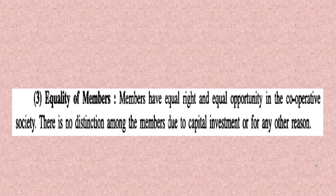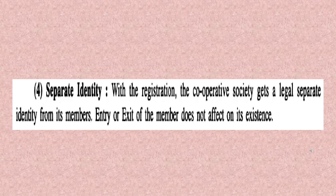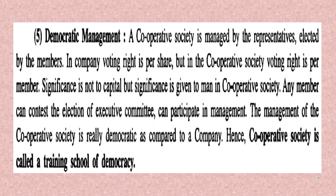Separate identity: With registration, the cooperative society gets a separate legal identity from its members. Entry and exit of members does not affect its existence. The cooperative society is registered under the Cooperative Societies Act and has a separate legal identity and existence from its members. Members may join or retire, and it has no effect on the continued existence of the cooperative society.